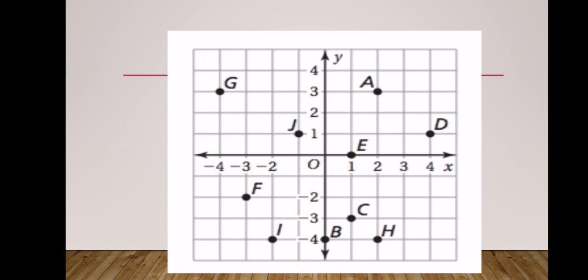The same rule applies to point B. Starting from the origin, you do not move along the x-axis at all, so the first coordinate is zero. The second coordinate is -4 because you move downward four places. So the coordinates of point B are (0, -4). These two cases were important because they differ from the previous examples.